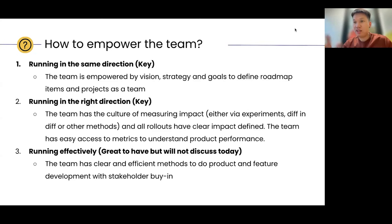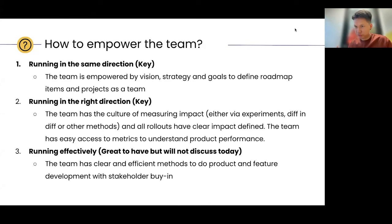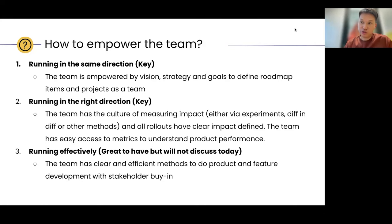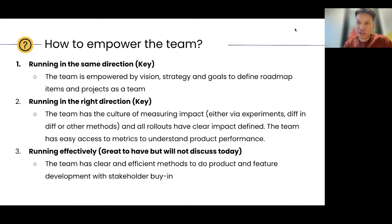Together, when we define the roadmap items and the strategy, we are all very aligned because we're all running in the same direction. This is very important to empower the team to be hypothesis driven because the first starting point is the outcome. If we cannot align on outcomes we're trying to drive, then there's no discussion on the changes we're going to make. So this is the first key point we need in a team to be hypothesis driven.